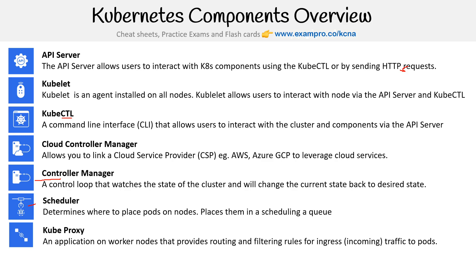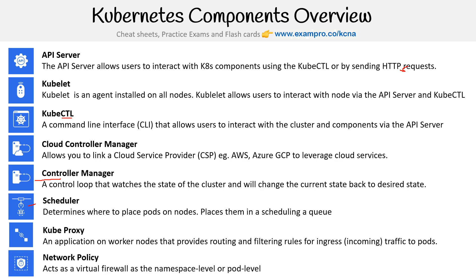You have kube proxy — an application on worker nodes that provides routing and filtering rules for ingress, or incoming traffic, to pods. Then you have network policy; these act as a virtual firewall at the namespace level or the pod level.